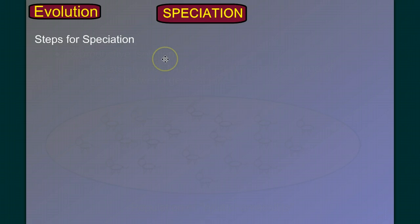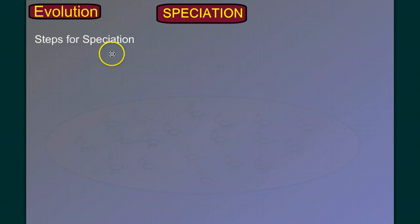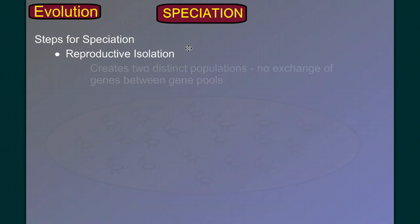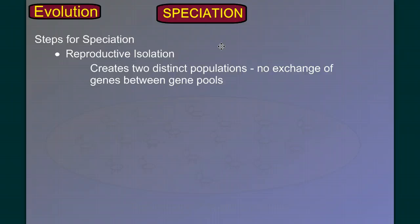If you could make a recipe for speciation, what would the ingredients be? The first ingredient is reproductive isolation. We're going to create two distinct populations with no exchange of genes between the gene pools — in other words, no gene flow.